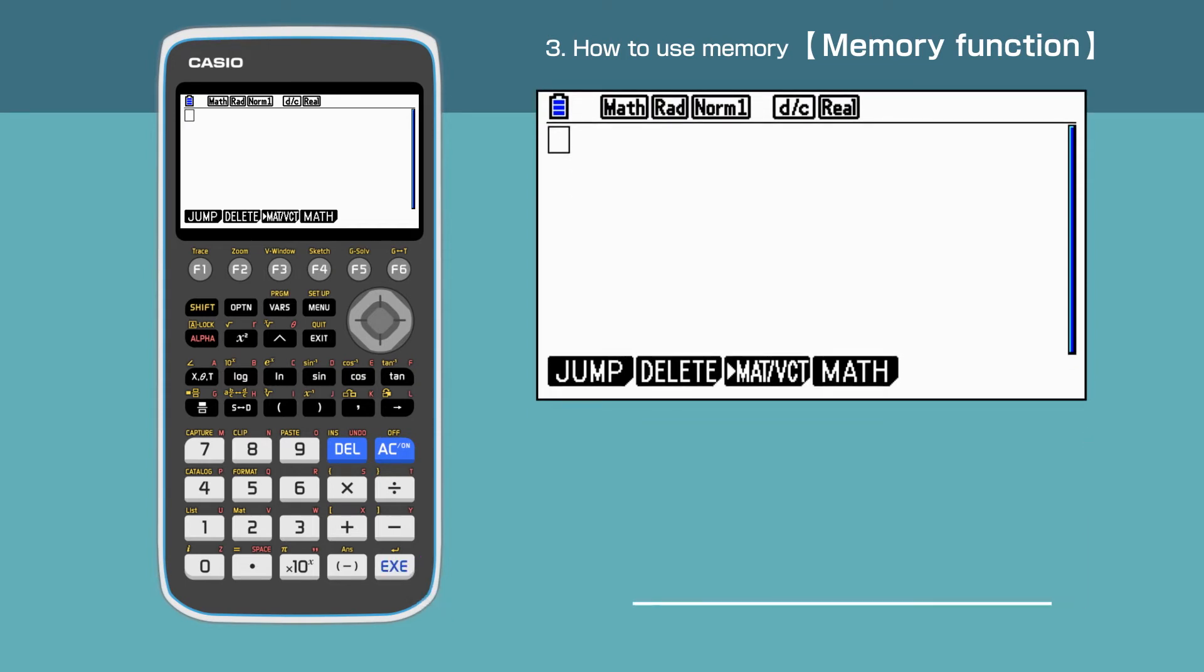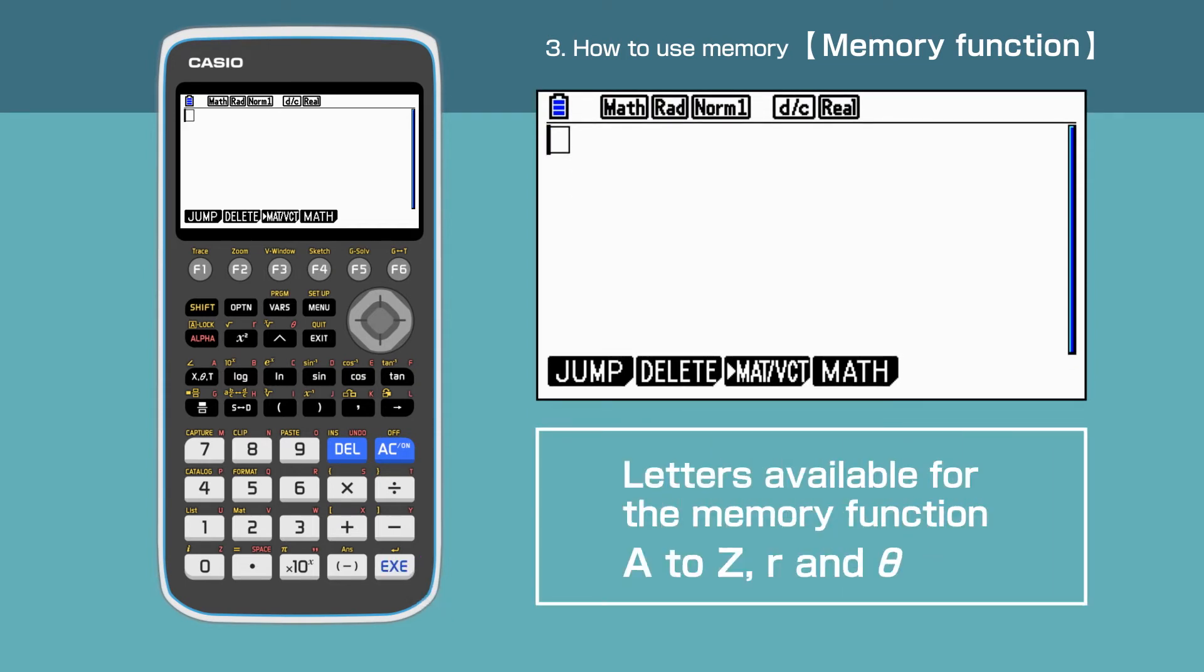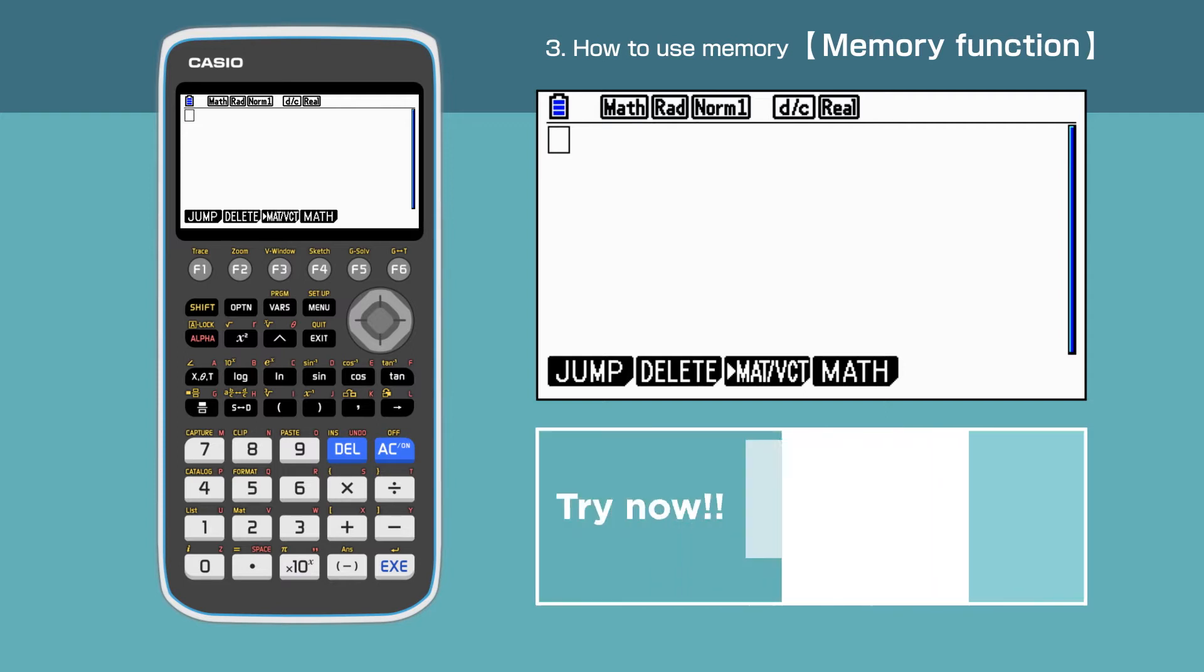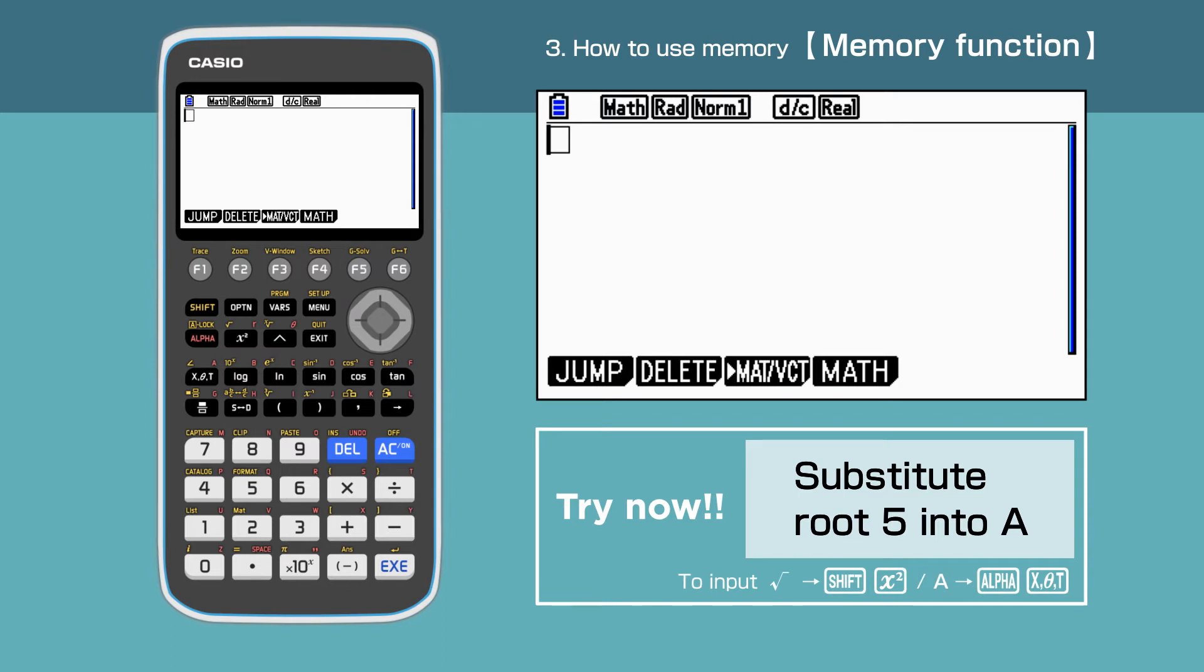For the memory function, we are able to use the letters between A and Z, R and Theta, showing in red above the calculator keys. For example, let us substitute root 5 into A. Enter the following to do this.